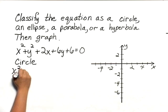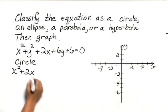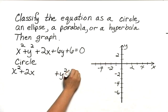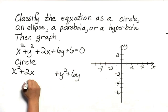We'll put the x squared terms together, and then we'll put the y squared terms together, and we'll subtract 6 from both sides.